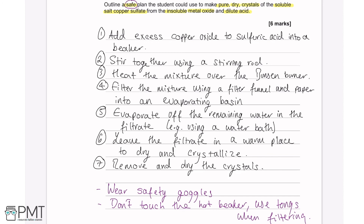We've made reference to the equipment list — the beaker, stirring rod, Bunsen burner, filter funnel and paper. The method is set out clearly so that if you followed these seven steps in the lab, you would end up with pure dry crystals of the soluble salt copper sulfate.